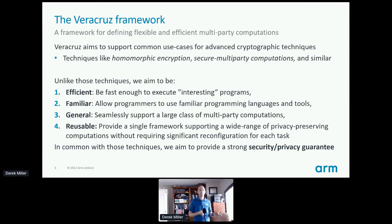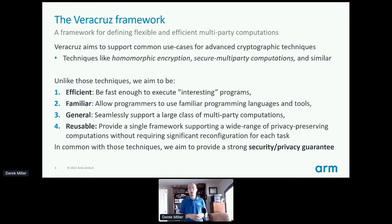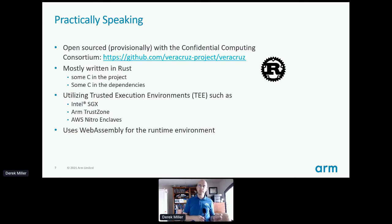We want to be reusable, which is important because of our multi-platform support. We support ARM and SGX platforms, and we want the enclave code you write to be reusable across those platforms. With all of that, we use TEEs to provide strong security and privacy guarantees. Practically speaking, we have been provisionally open-sourced with the Confidential Computing Consortium — we are open source but still provisional with the CCC, mostly because of the lawyers.